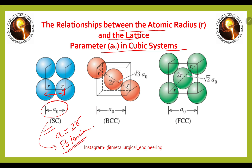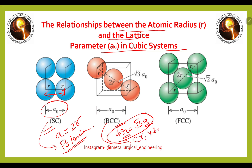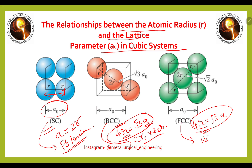In the case of body-centered cubic (BCC), the relation between atomic radius and lattice parameter is 4r = √3·a. Examples for BCC are chromium, tungsten, etc. For face-centered cubic (FCC), the relation is 4r = √2·a, and examples include nickel, aluminum, etc.